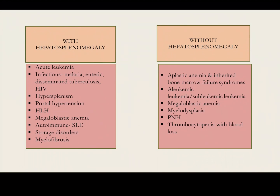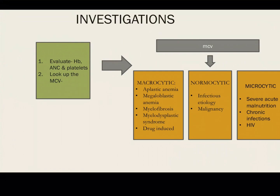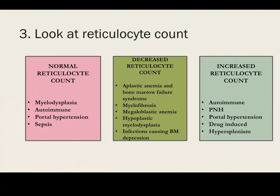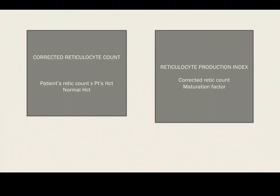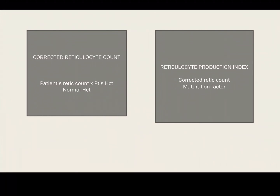Moving to investigations, we will need a complete blood count with peripheral smear. In the CBC, the MCV value tells us whether cells are macrocytic, normocytic, or microcytic, helping narrow the differentials. The next step is the reticulocyte count — the number of immature RBCs produced by the bone marrow, indicating its status and functioning. The retic count can be normal to increased in autoimmune conditions and decreased in aplastic anemia and bone marrow failure syndromes. Since retic count is expressed as a percentage of new cells upon old RBCs, it can be misleading in anemic patients, so we calculate the corrected retic count.